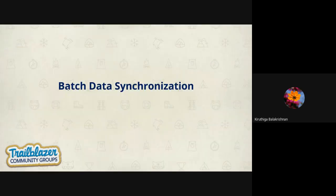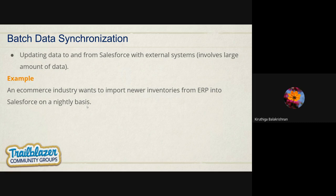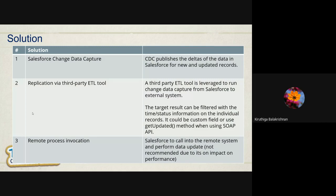Moving on to Batch Data Synchronization. This pattern is applicable when data needs to be updated to and from Salesforce and an external system on a scheduled basis. One example: in e-commerce, where they want to import updated inventory and pricing from an ERP into Salesforce on a daily basis. This is a bi-directional update — you synchronize data from Salesforce to the external system and from the external system to Salesforce.